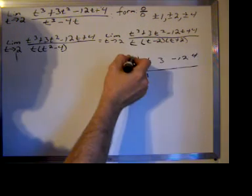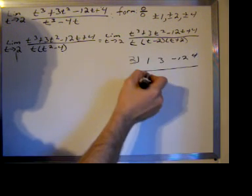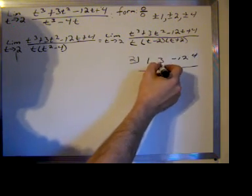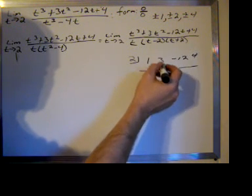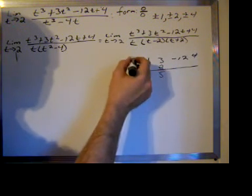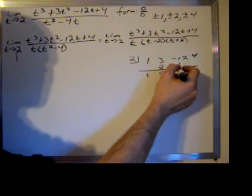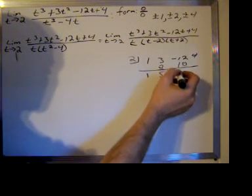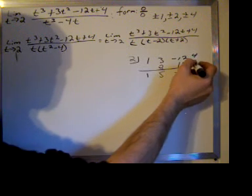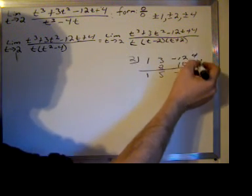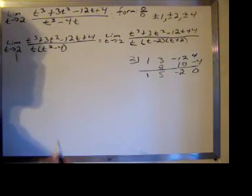We begin by multiplying, the 2 times the 1 that we've carried down, and we write it right here. We add these two numbers, 3 plus 2 is 5. We multiply 2 times 5 again, getting 10. We add once again, and we get negative 2, and we say 2 times negative 2 is negative 4. 4 minus 4 is 0. That's what we wanted.